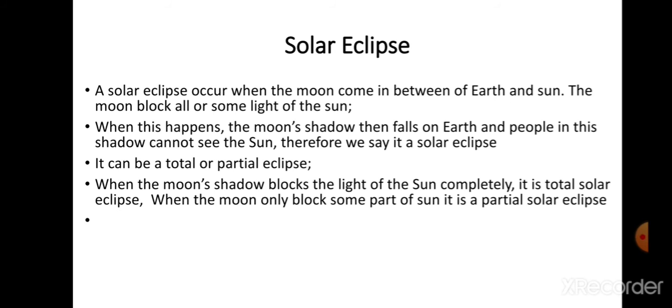It can be a total or partial eclipse. When the Moon's shadow blocks the light of the Sun completely, it is a total solar eclipse. When the Moon only blocks some part of the Sun, it is a partial solar eclipse.